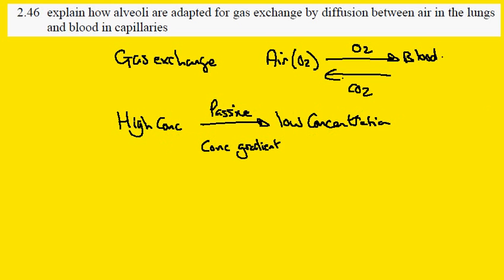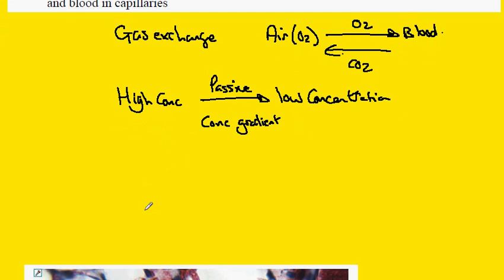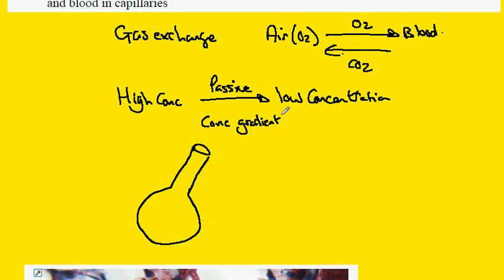Looking at a diagram of the alveoli: alveoli are the dead-end structures of the bronchioles. The end of the bronchiole becomes expanded to form the alveoli, and around the alveoli are lots and lots of blood vessels.